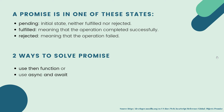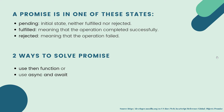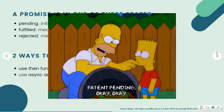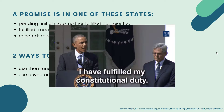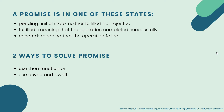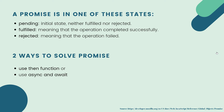To understand how to handle promises, we need to understand their three states: pending, fulfilled, and rejected. Think of booking an Uber — once you book, the cab's arrival is in the pending state. When the driver arrives, the promise is fulfilled. If the driver cancels the ride, the promise is rejected. So promises give us these three states.